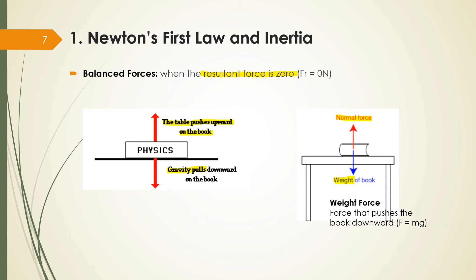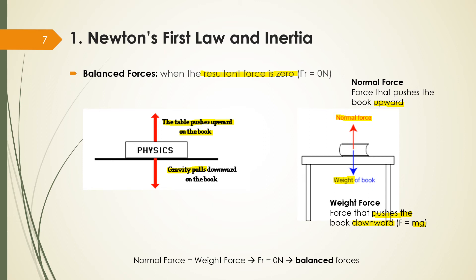The weight force pushes the book downward, and I can calculate this force by multiplying the mass of the book by gravity — remember, weight is different from mass. The normal force pushes the book upward. Because my book is stopped — not going up or down — my normal force equals my weight force, so my resultant force is zero. When my resultant force is zero, I say it has balanced force. It doesn't mean there are no forces; it means my forces are balanced. The resultant force acting on this book is zero newtons.